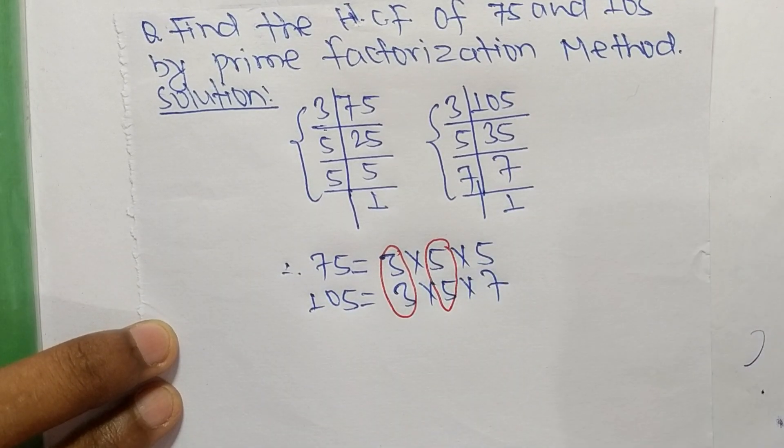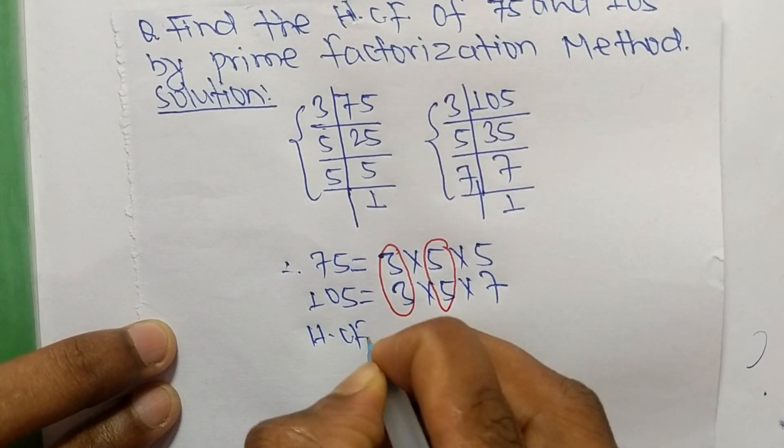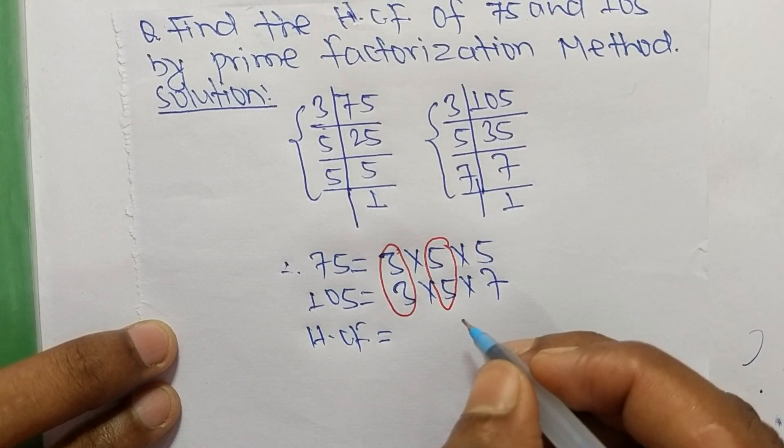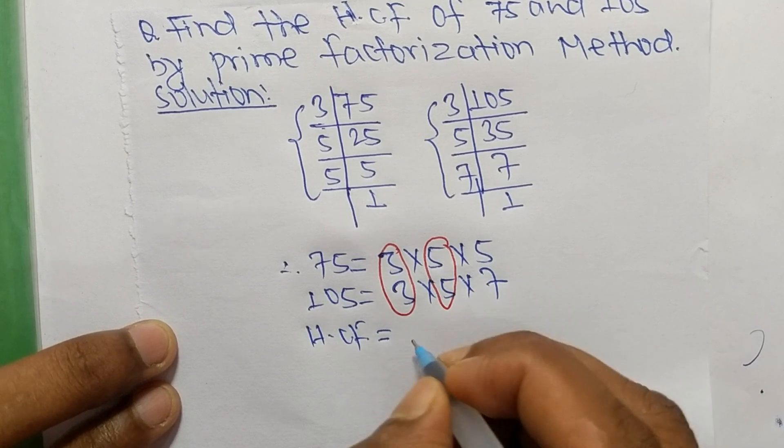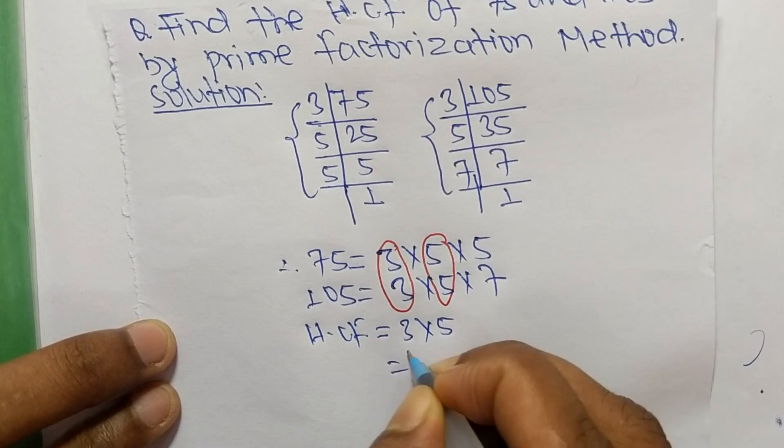The HCF is equal to the product of common factors. The common factors here are 3 and 5, so...